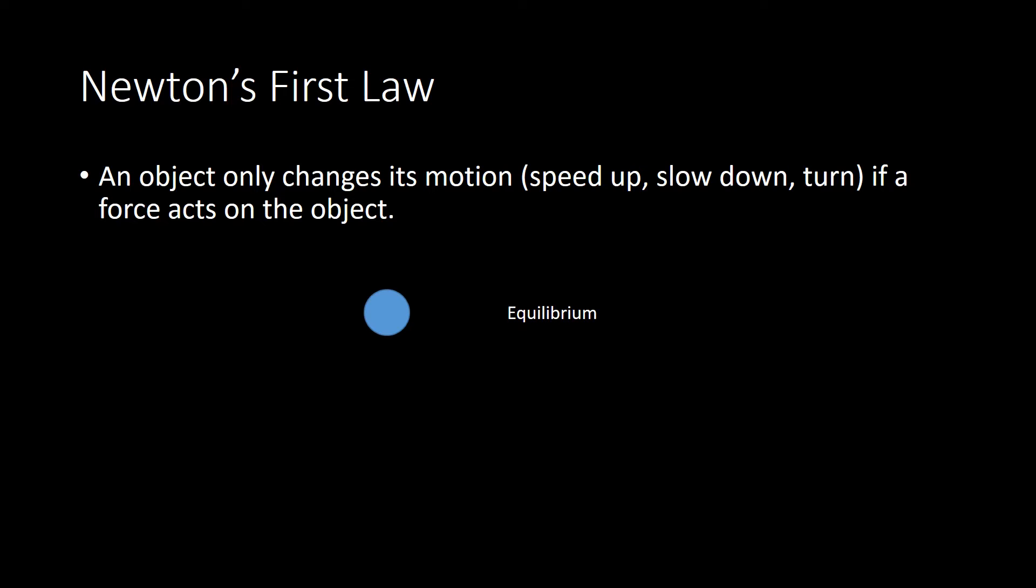This absence of forces can actually happen in two ways. In this case the ball was stationary and no forces were acting on it so it continued to remain stationary. That is describing a static equilibrium case. On the other hand we might have had a ball which had some initial velocity and that ball just kept on moving with that same velocity because again there were no forces acting on it. Since there's no forces it's equilibrium again but since it's moving we call that dynamic equilibrium.